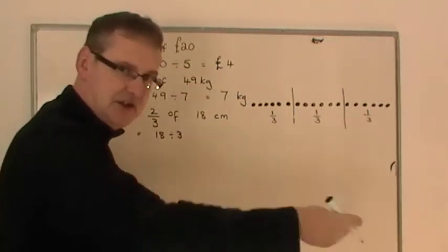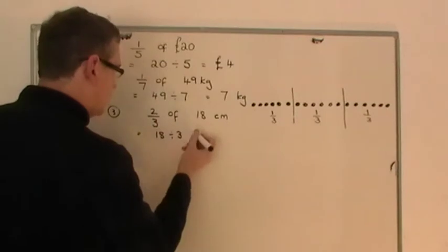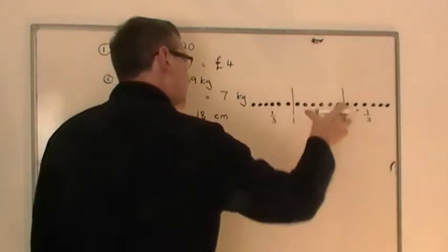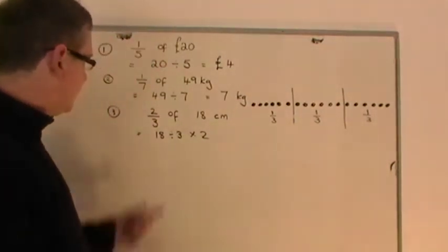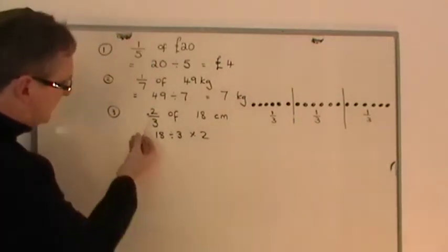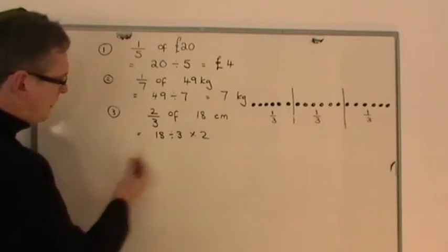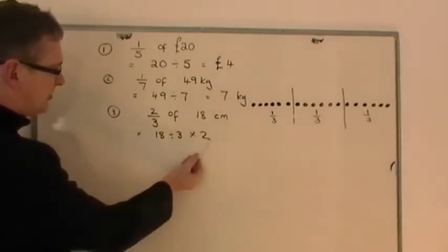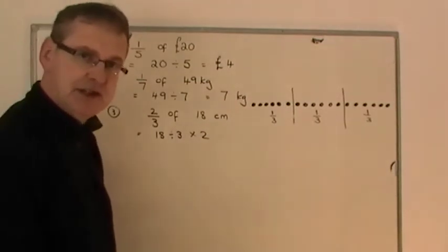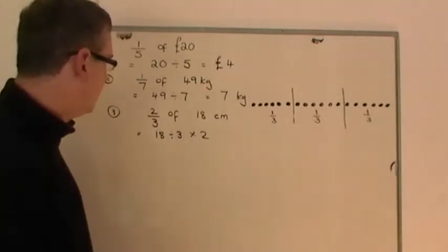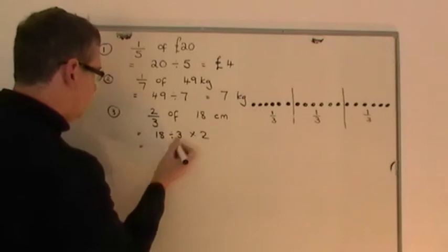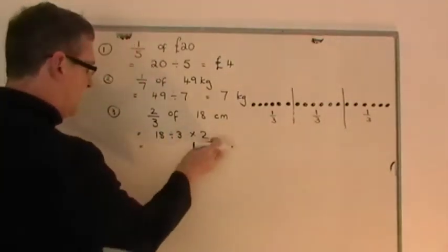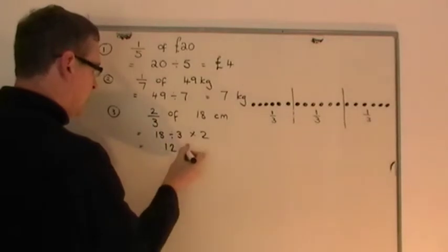So what I'm going to do to get two-thirds is double the one-third. And as you can see from the fraction, you just take the 18, share by the bottom number, and times by the top number. It's as simple as that — that's the process. So 18 share by three gives you six, which is what each third is. And then you times it by two, and you get twelve.